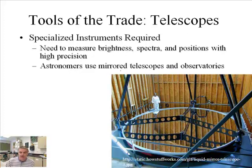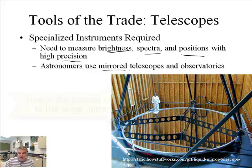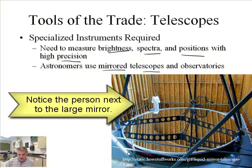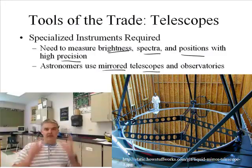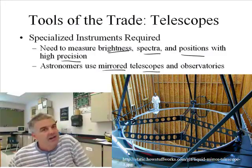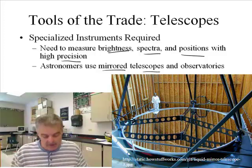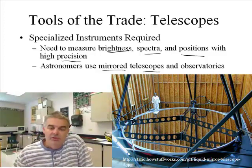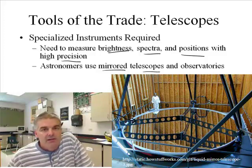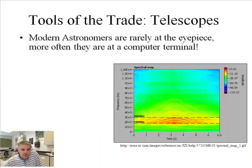Here's an ancient telescope. We need a specialized instrument. If we need to measure brightness, spectra, and positions with high precision, then we need what's called a mirrored telescope. Most telescopes are actually mirrors. Most people think of telescopes as using lenses like eyeglasses, but that's not typically how telescopes are made anymore. That was the beginning — what Galileo and Newton and those early astronomers used. Now we're talking about what are called reflecting telescopes.